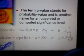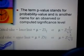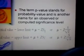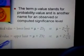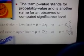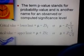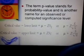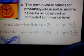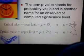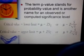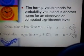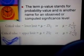The term p-value stands for probability value and is another name for an observed or computed significance level. To find out whether the difference between the assumed value of 3 and the calculated value of 3.1 is significant, we use two formulas: critical value minus lower limit, and critical value minus upper limit. This gives us upper and lower limit values beyond which the difference is assumed to be significant, and within which the difference is assumed to be not significant.